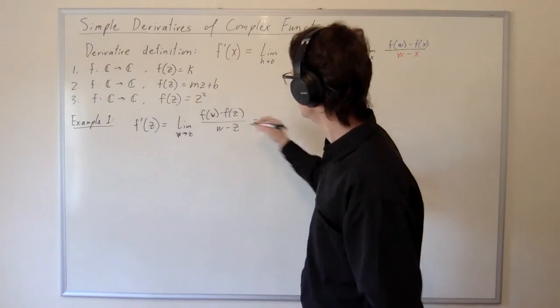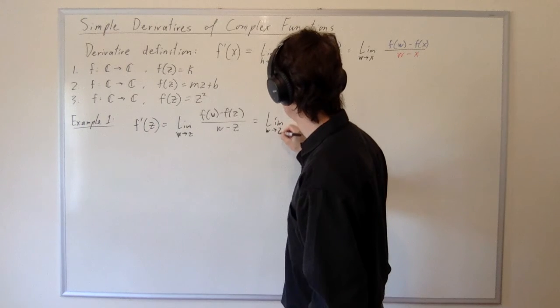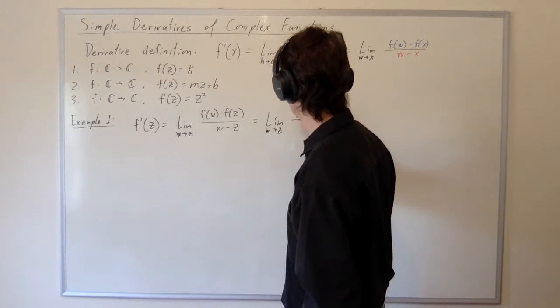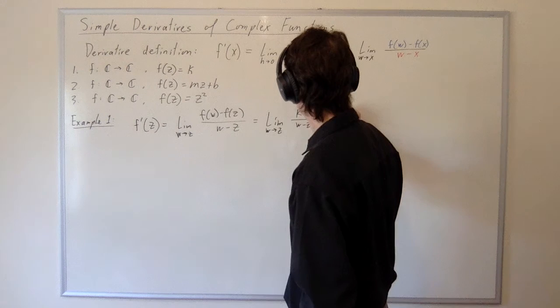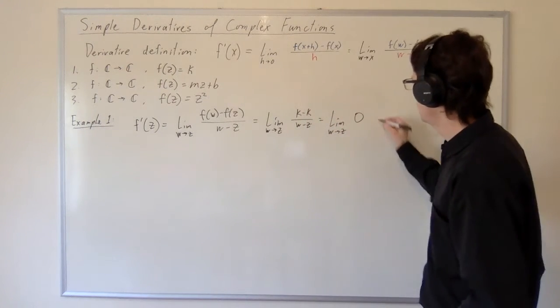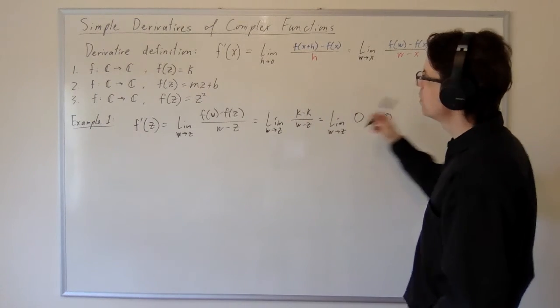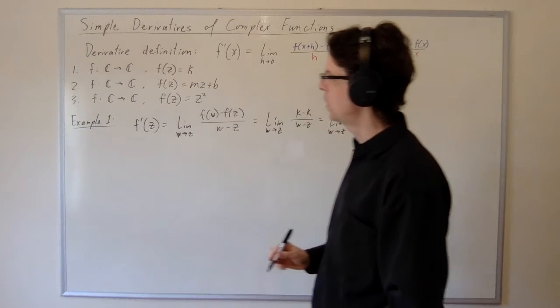Which, if the function is constant, can be rewritten as the limit as w approaches z of k minus k over w minus z, which is the limit as w approaches z of zero, which of course is zero. And so we get that the derivative of the constant function is zero as expected.